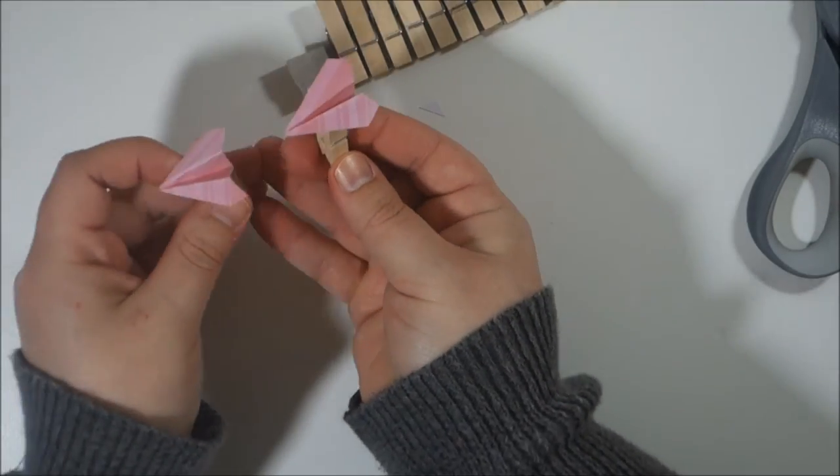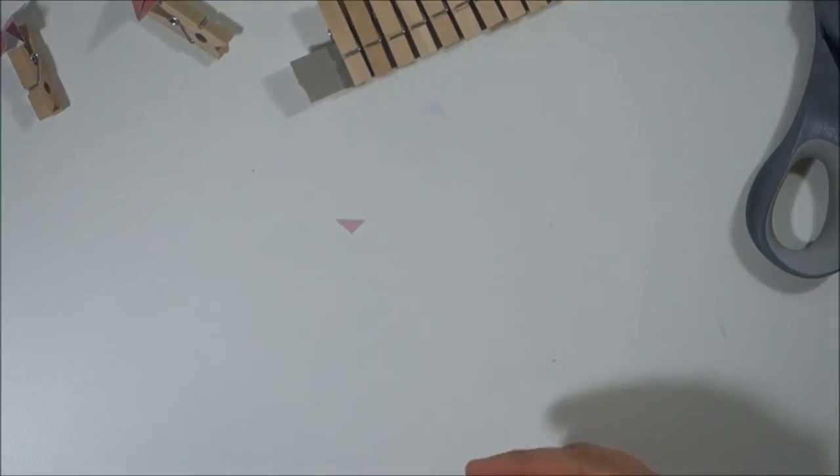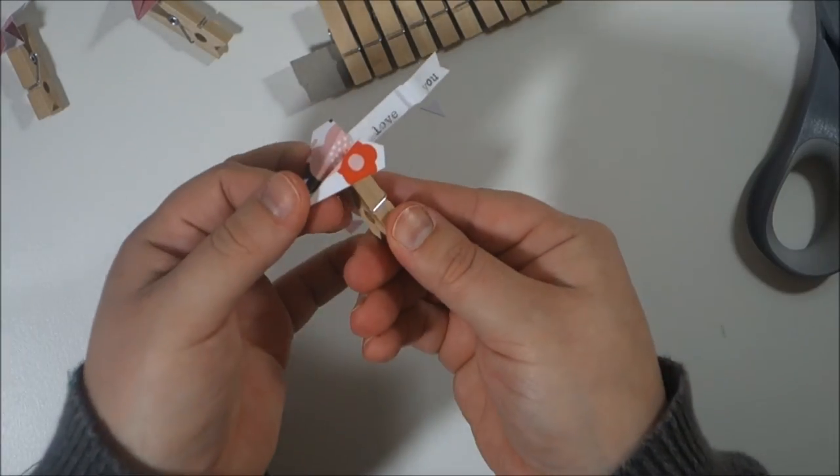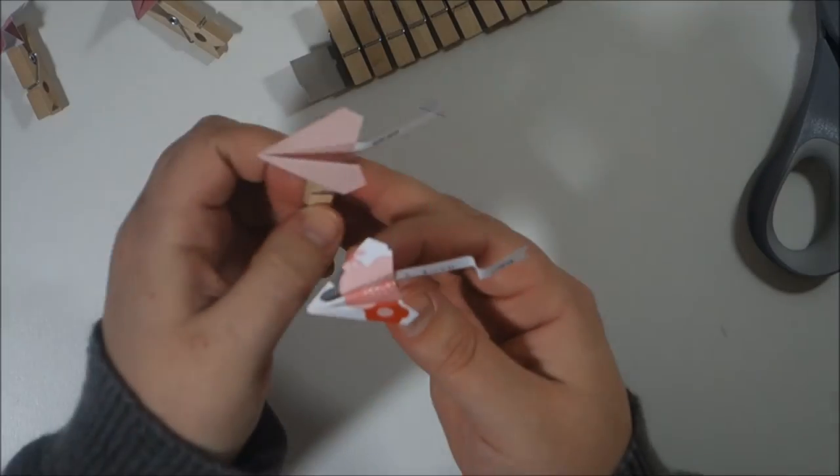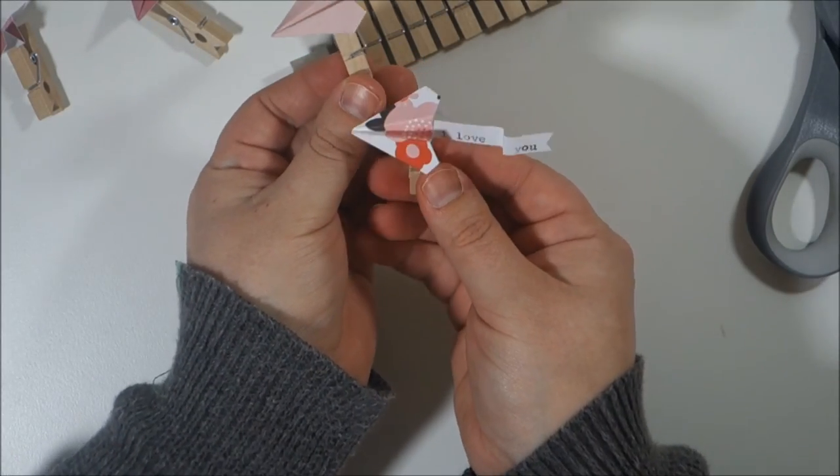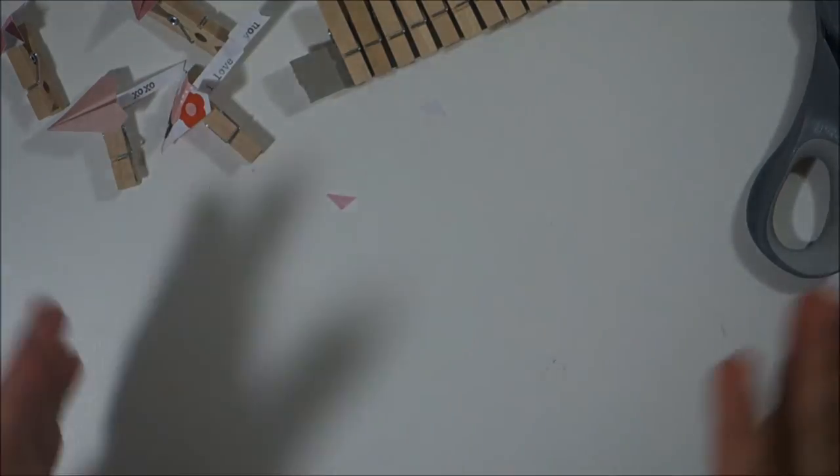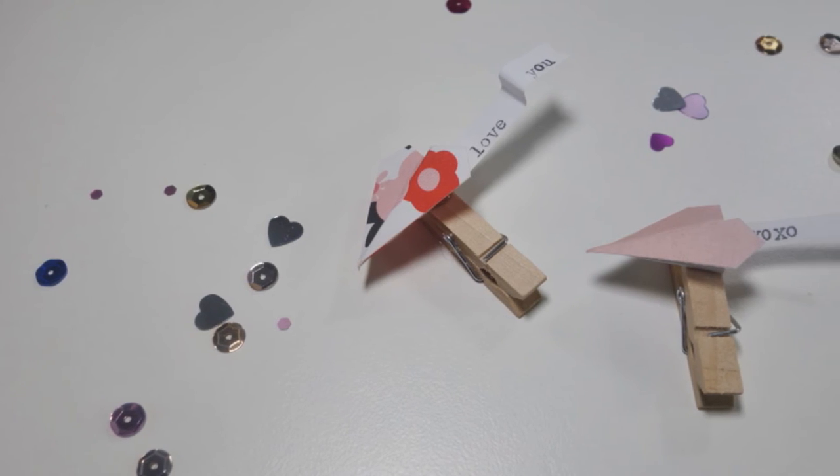And then with the little banners, all I did was I typed up some on some white paper just on my typewriter, and then I just cut them out into a little banner shape. So here's some closeups for you.